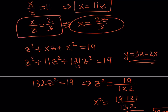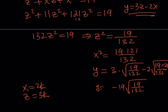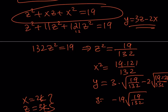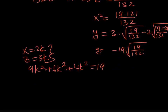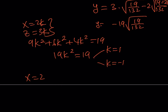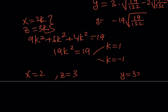For the second branch, let x equals 2k and z equals 3k. Plugging into z squared plus zx plus x squared equals 19: 9k squared plus 6k squared plus 4k squared equals 19, giving 19k squared equals 19, so k equals 1 or k equals negative 1. When k equals 1: x equals 2, z equals 3. Using y equals 3z minus 2x: y equals 3 times 3 minus 2 times 2 equals 9 minus 4 equals 5. So (x, y, z) equals (2, 5, 3) is a valid solution.